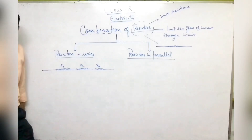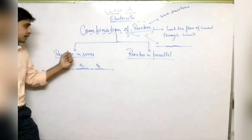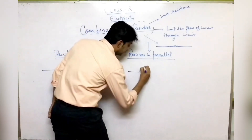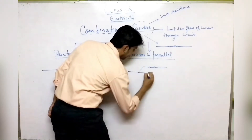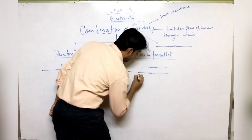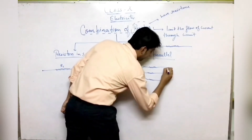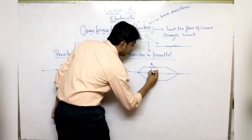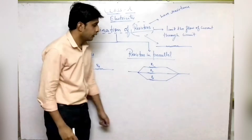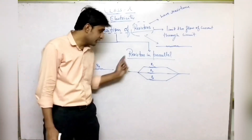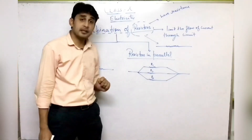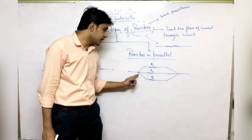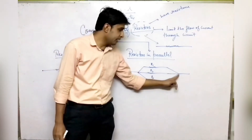In this way we can connect many resistors in series — not only three, we can connect many others as well. For parallel connection, R1, R2, and R3 all have the same starting point and the same ending point. That is how we connect them in parallel.